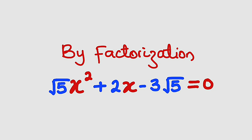Hello, good day viewers. In this tutorial, we are going to solve this quadratic equation by factorization. Root 5x squared plus 2x minus 3 root 5 equal to 0.